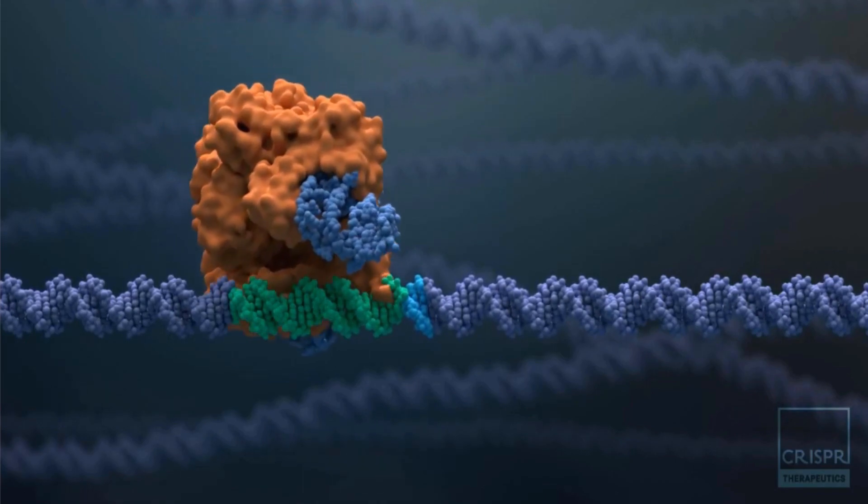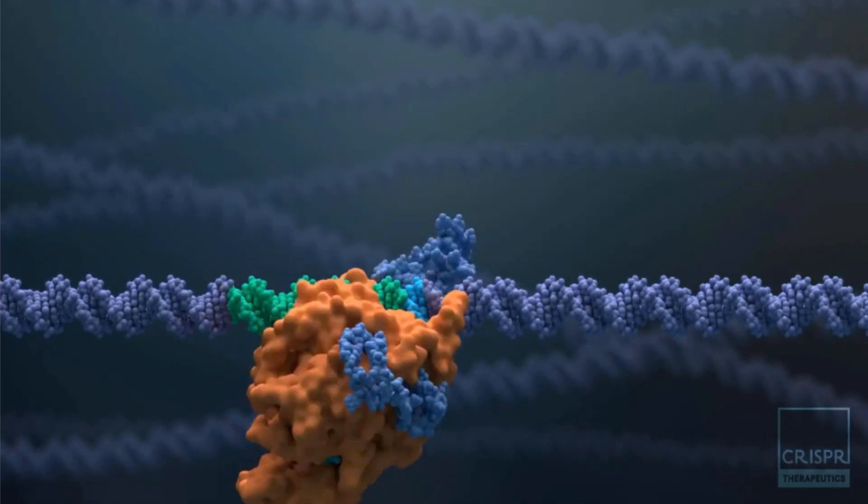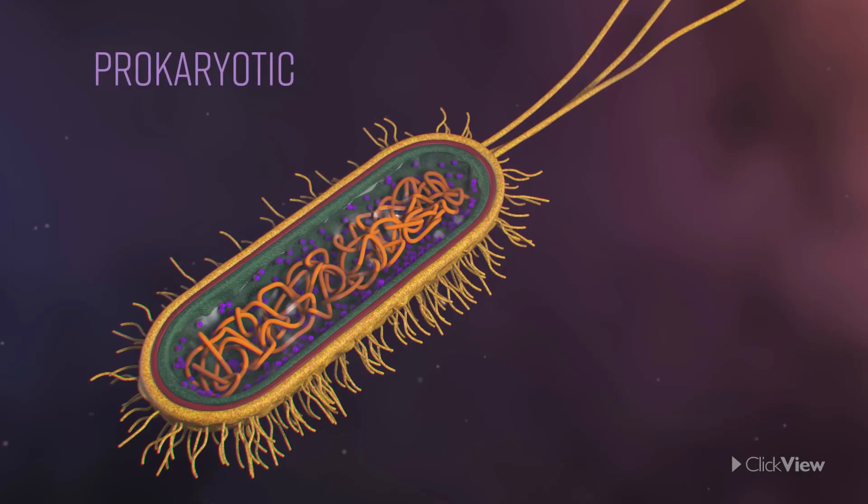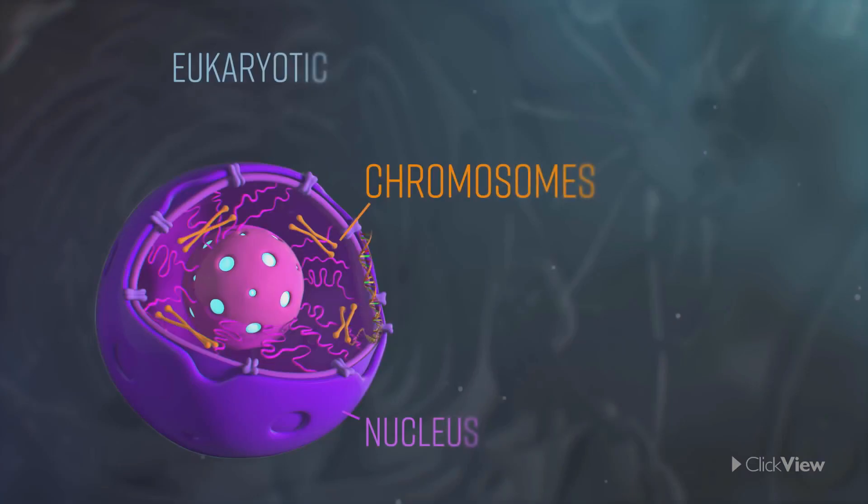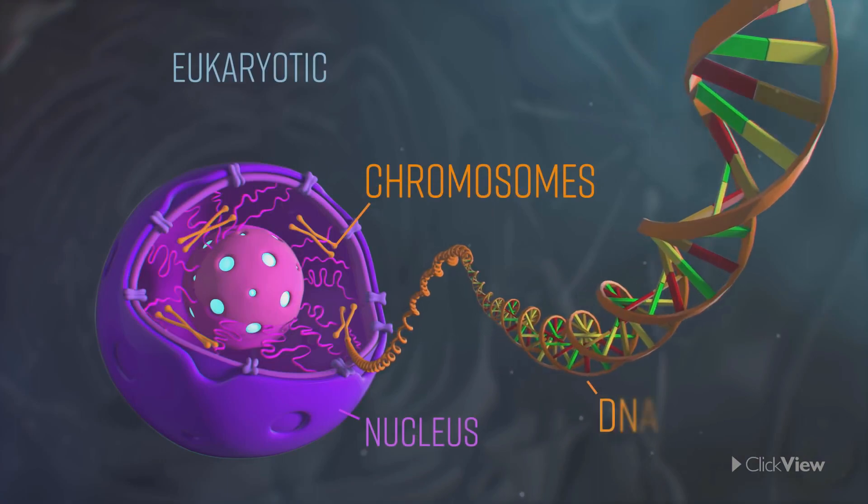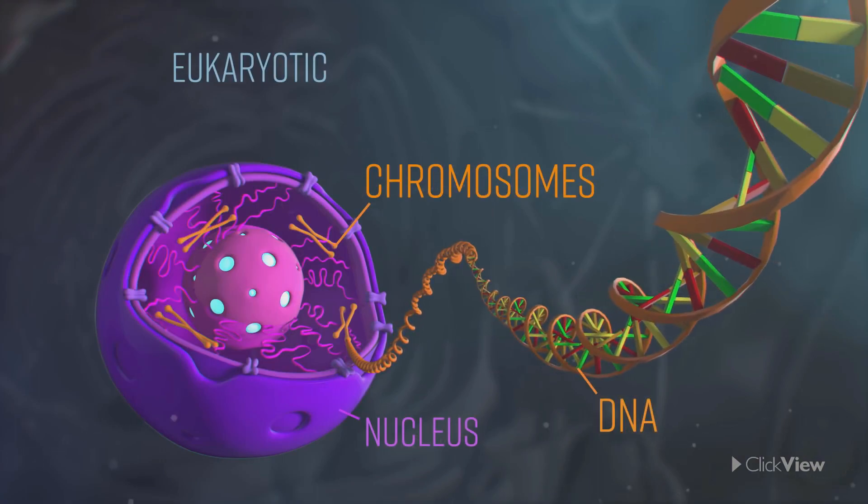Well, CRISPR is nothing more than clustered regularly interspaced short palindromic repeats. It is a family of DNA sequences found within genomes of prokaryotic organisms such as bacteria and archaea, but not in eukaryotic organisms such as ourselves or other animals, or really anything multicellular like trees, grass, cats, whatever.